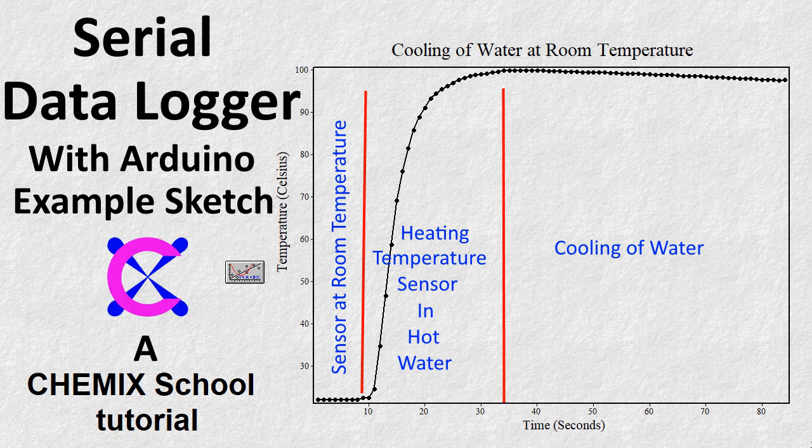In this tutorial, we will show how to use the Chemex School Data Logger. The experiment is about logging temperature changes over time after a temperature sensor has been lowered into a beaker filled with 100 milliliters of hot water.